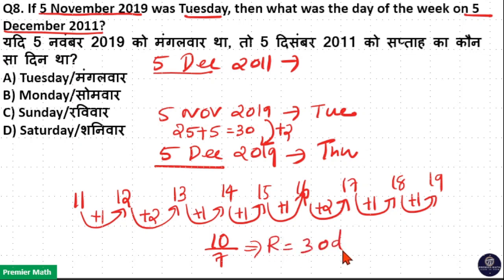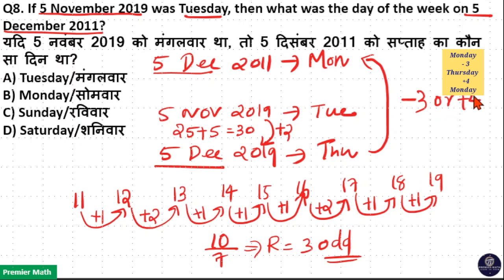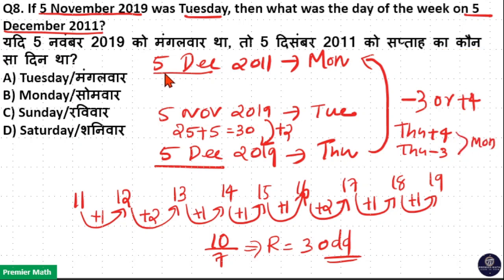This is going backward — from 2019 to 2011. We calculated 2011 to 2019 as 3 odd days, but since this is going backward, that is 3 days behind Thursday. Thursday minus 3 equals Monday. Or you can calculate: minus 3 or plus 4 — 3 plus 4 is 7, so Thursday plus 4 or Thursday minus 3, both are Monday. So 5 December 2011 was Monday. Option B is your answer.